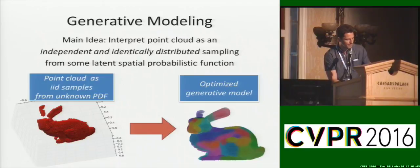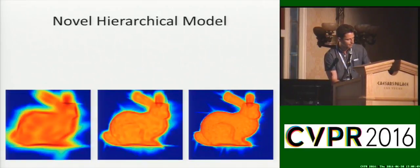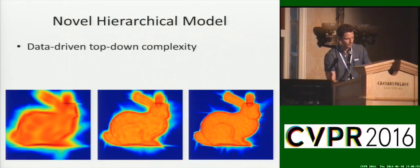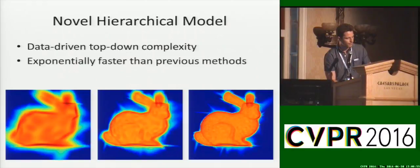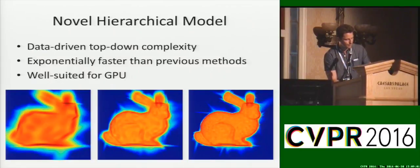Furthermore, being probabilistic, we can utilize the same optimization for denoising and outlier handling. Though other generative techniques exist, notably for point cloud registration, we propose a novel top-down hierarchical variant that exponentially speeds up construction relative to the size of the model, and is also particularly well-suited for parallel architectures such as the GPU.